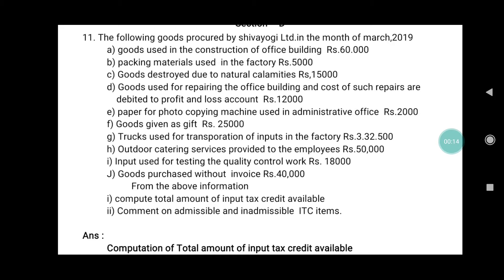The following goods were procured by Shiva Yogi Limited in the month of March 2019. First, goods used in construction of office building: Rs. 60,000. Second, packing material used in the factories: Rs. 5,000. Third, goods destroyed due to natural calamity: Rs. 15,000.